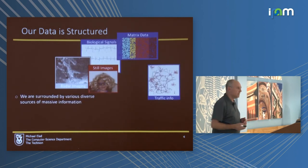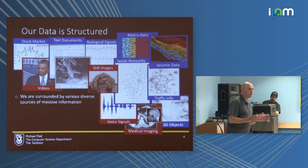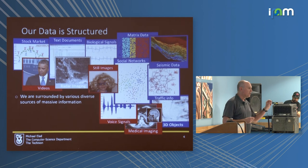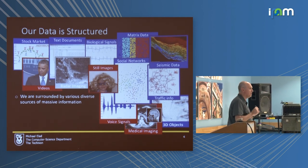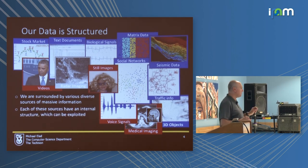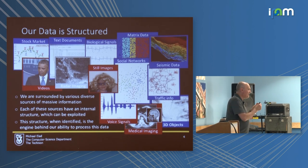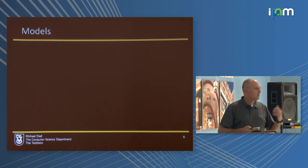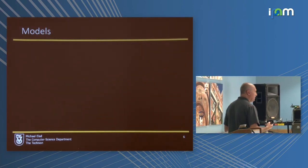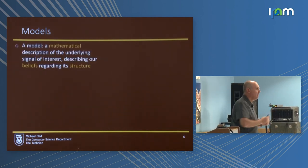We are processing information — all sorts of information. Those sources are very different from each other, and yet they share something fundamental in common: each and every one of them has inner structure. Signal processing, image processing, and machine learning are all about identifying this structure and exploiting it. The fact that there is structure is the reason why we can process signals to begin with. You identify the structure by imposing models — bringing mathematical equations and imposing them on your data.